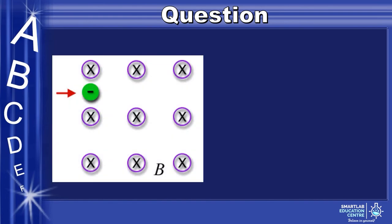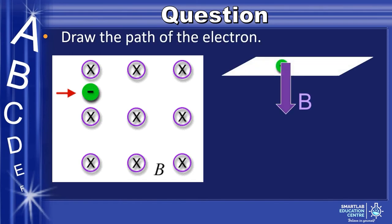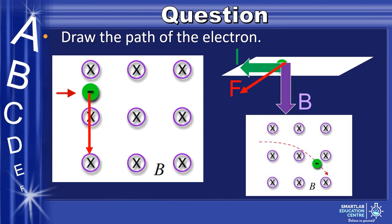Here is an electron passing by a magnetic field pointing into the paper. Draw the path of the electron. Similarly, we can draw the magnetic field as shown. Since the electron moves into the magnetic field, the conventional current points towards the left. Be aware that the current is drawn in the opposite direction to the flow of negative charges. By Fleming's left-hand rule, we get the force pointing in the direction shown. Hence, by taking note of the velocity of the particle and the force exerted, we get a curved path drawn as shown.